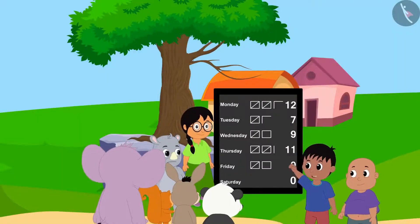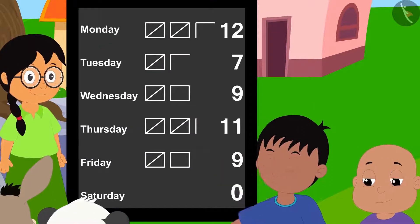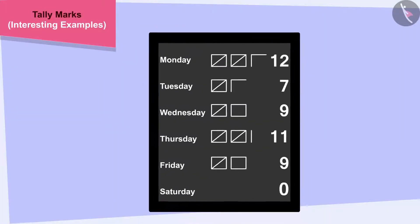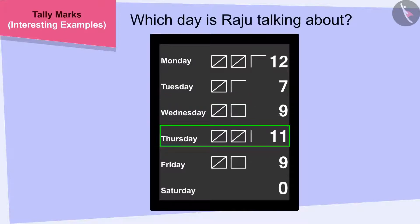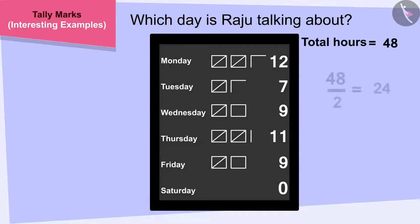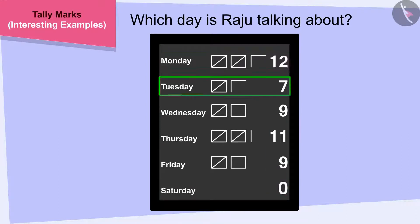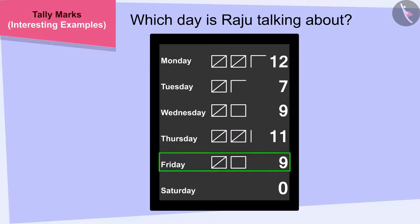Hey Babalu, look — by the end of this day, we had completed more than half of the total hours, Raju told Babalu. Children, can you tell which day Raju is talking about? The villagers had to work together for 48 hours. Half of 48 is 24. Therefore, to find a solution, we first have to find the total hours of work completed by the end of each day, then find out by the end of which day more than 24 hours of work was completed.